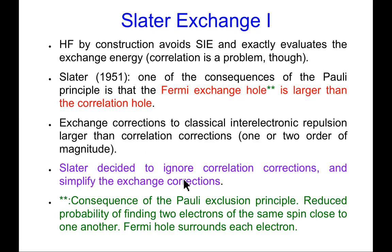But in any case, let's move a little bit forward in the history of quantum chemistry and go to the 1950s. And during this time, Slater was thinking about how to make Hartree-Fock calculations a bit faster. So Hartree-Fock, by its construction, actually avoids the self-interaction error, and it gets the exchange energy exactly. Of course, we know that it has problems with electron correlation, but by construction, it deals with exchange.